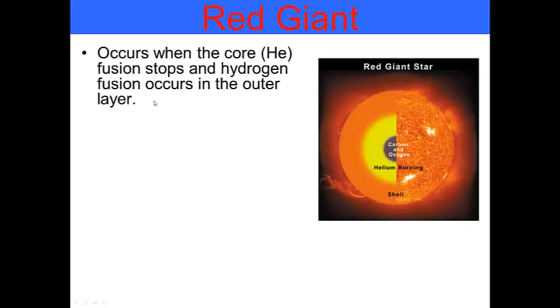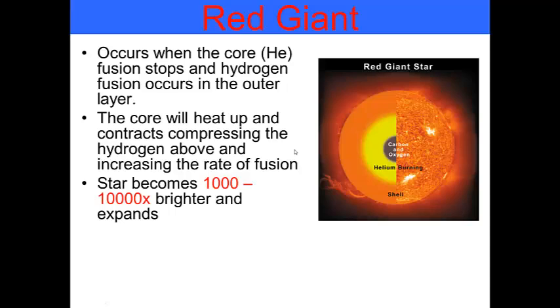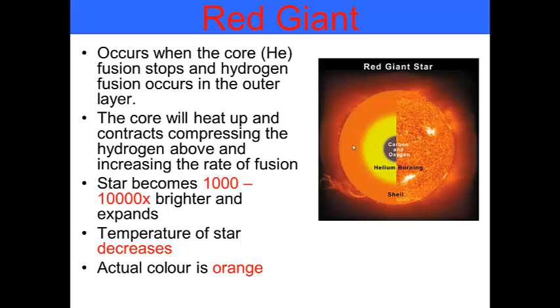What is a red giant? A red giant occurs when the core or helium fusion stops and hydrogen fusion occurs in the outer layer. The core will heat up and contracts, compressing the hydrogen from above and increasing the rate of fusion. In a red giant, you have an increased rate of fusion. The star becomes 1,000 to 10,000 times brighter and expands. It expands and it's cooler, but the rate of fusion heats up, which is why it's called a red giant. The temperature of the star decreases. The actual color of the star is orange.